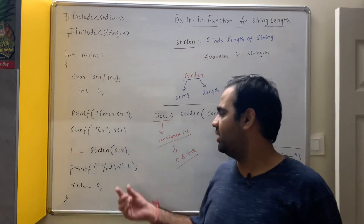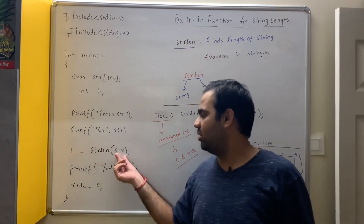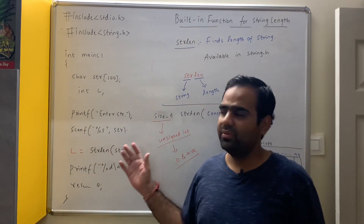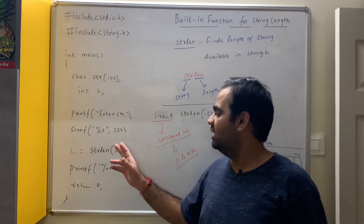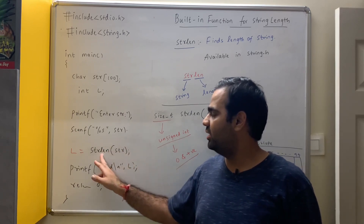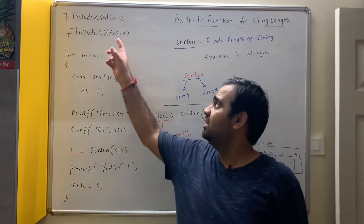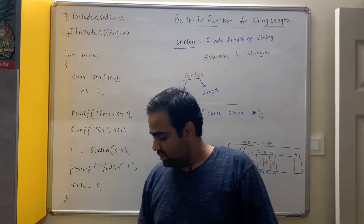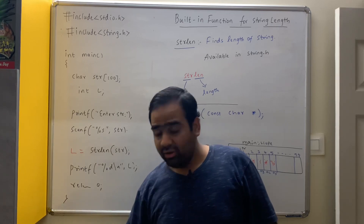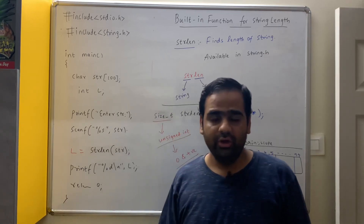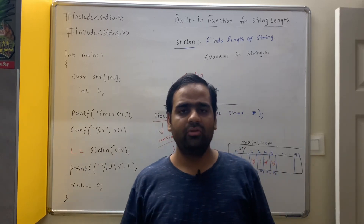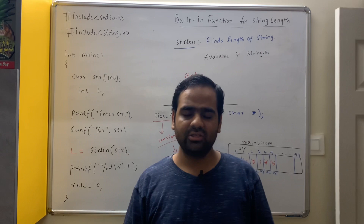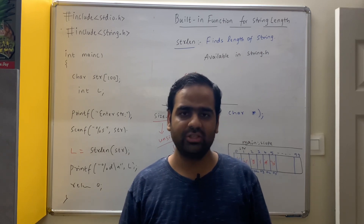This is using the built-in function given by the compiler, available in string.h. Directly, we can say strlen(str) and print the value of l. Whenever you use a built-in function, you have to write string.h. Thank you friends for watching this video. Please like this video, subscribe to my channel and share the channel with your friends. Thank you.